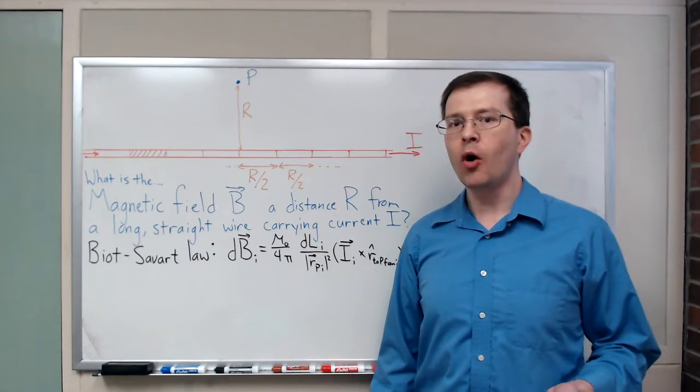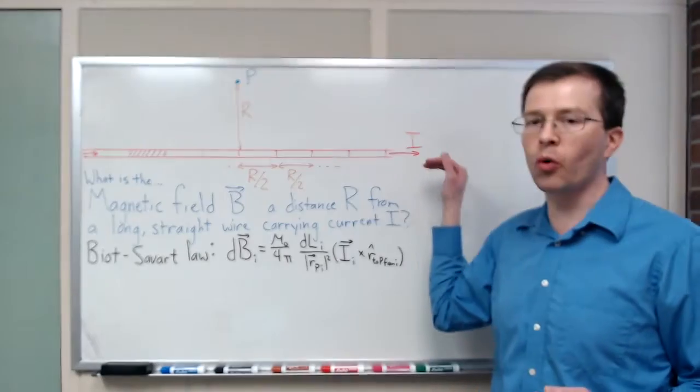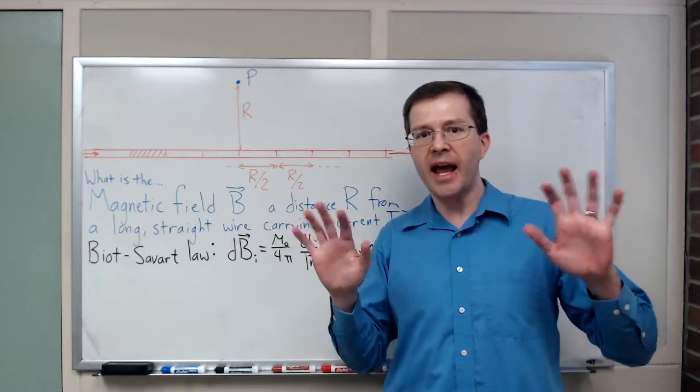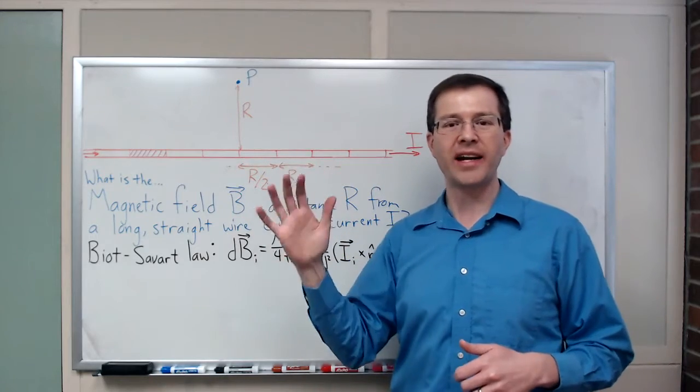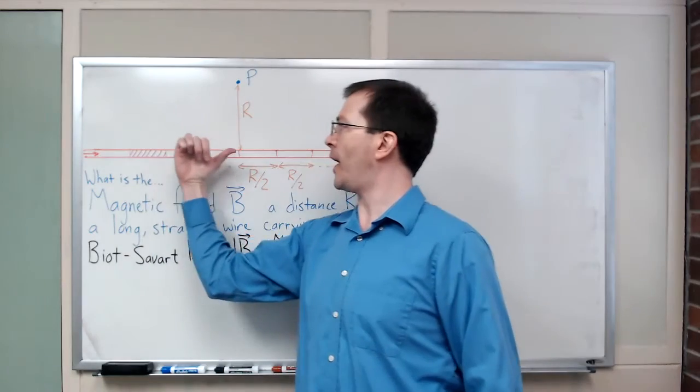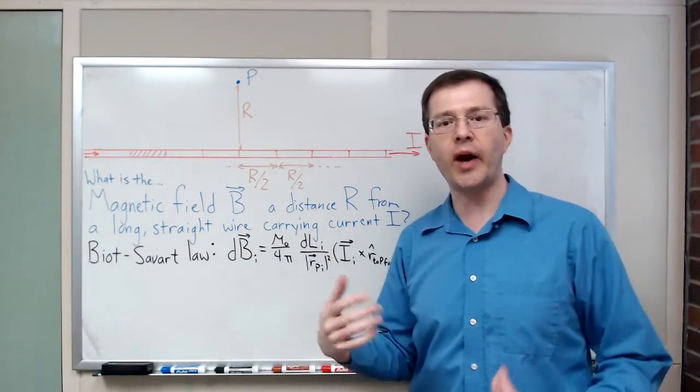In studying magnetism, one of the things we've learned is that electric current flowing through a wire produces a magnetic field around the wire. We've got this right-hand wire rule where you put your thumb along the wire and your fingers curl around that wire, showing the direction that the magnetic field circles around the wire.